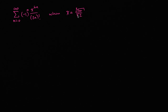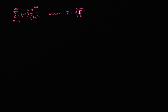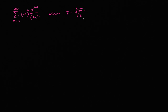I encourage you to pause this video and give it a go on your own. The key hint is to figure out what function this is the power series for, and then use that function to evaluate it. There's another clue: this is a suspicious-looking number — pi over two — that looks like something you'd use a trig function to evaluate.